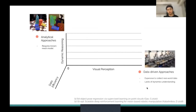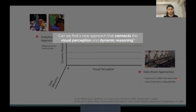The recent data-driven approach is the reverse. It is pretty good at handling visual inputs, but it lacks dynamics understanding — it cannot reason about the consequences of different actions. On top of that, it requires a lot of real-world data. So the question is: can we find a new approach that connects visual perception and dynamics reasoning while using less data?